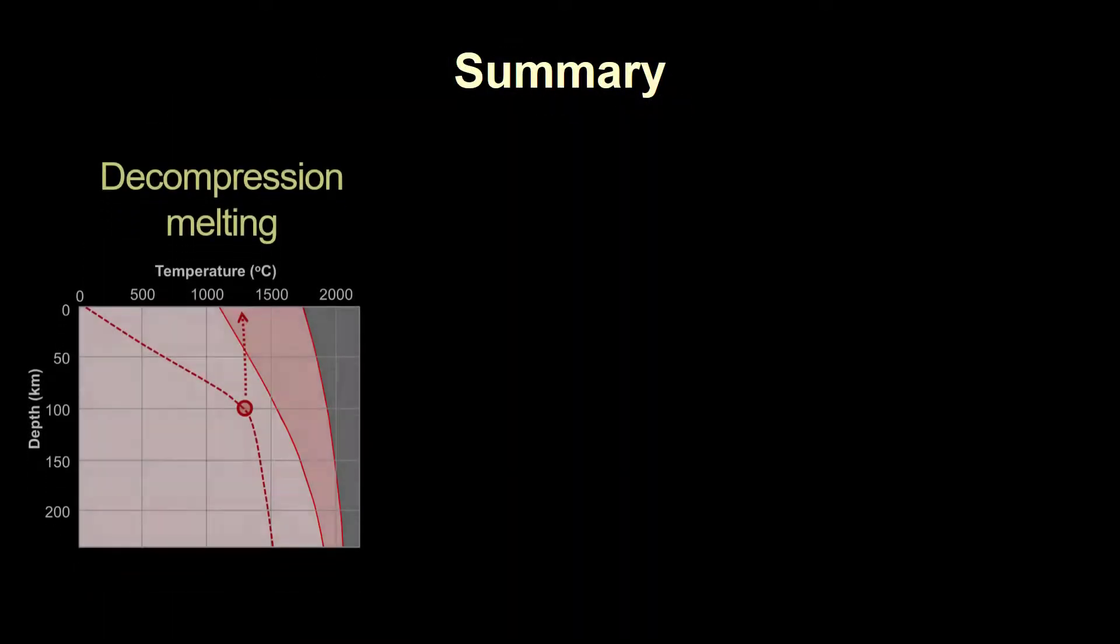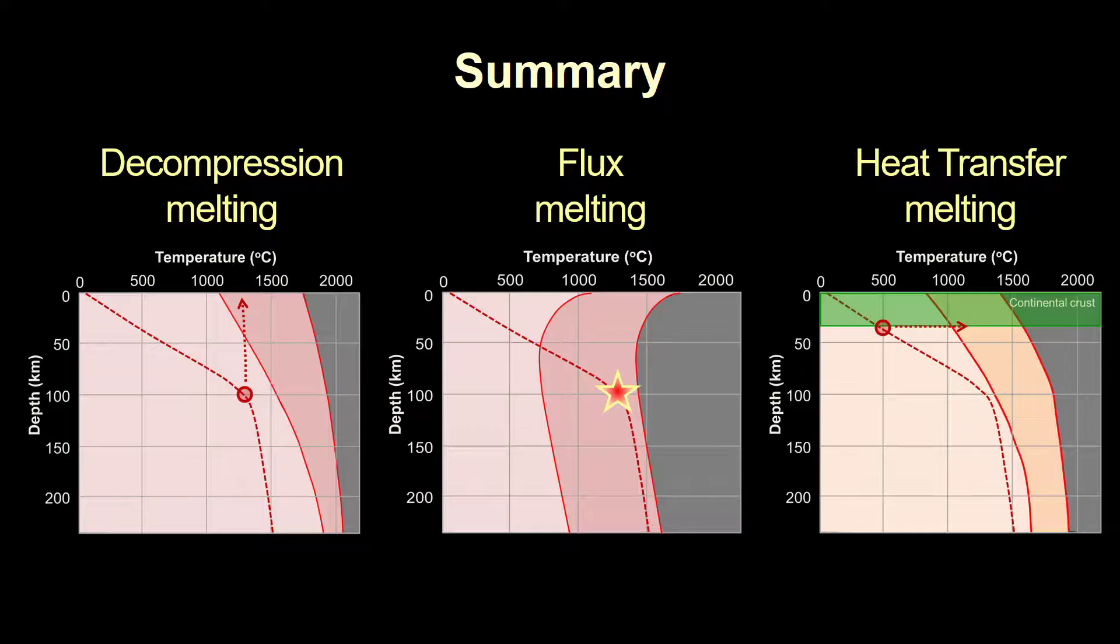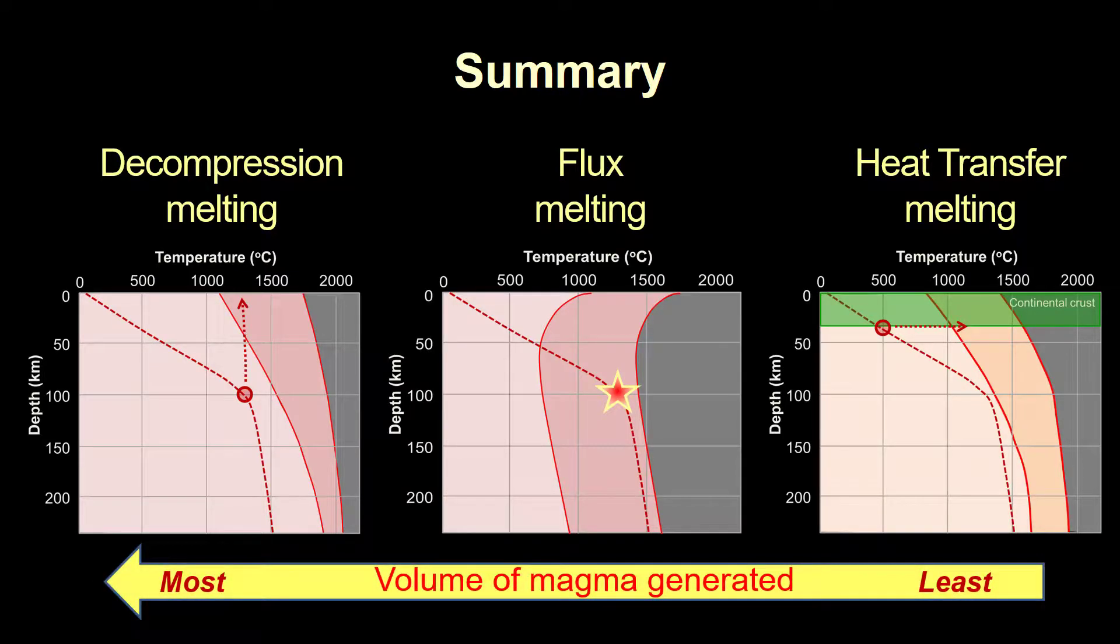So to summarize, we described three different ways to create magma by melting rocks in the mantle and crust. As arranged here, they are in order of volume of magma produced. Decompression melting is the dominant mechanism of oceanic ridges and hotspots and also contributes magma to continental rifts. Flux melting is the main source of magma for island arcs and volcanic arcs associated with convergent boundaries.